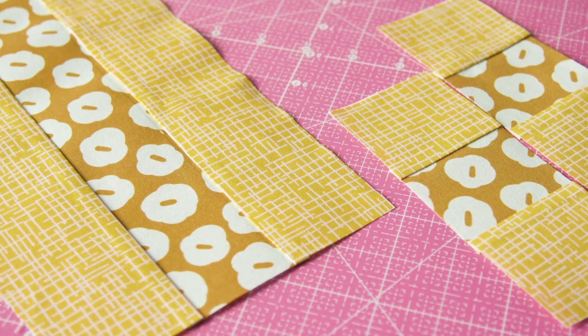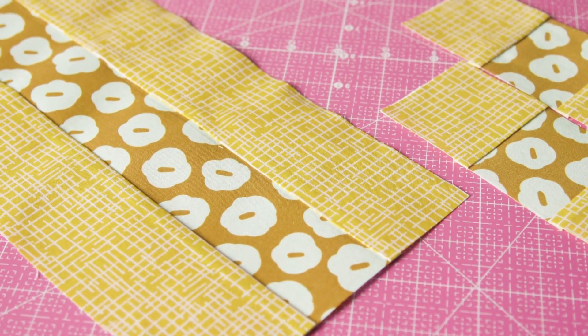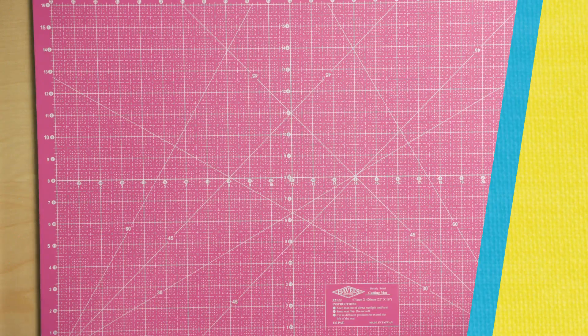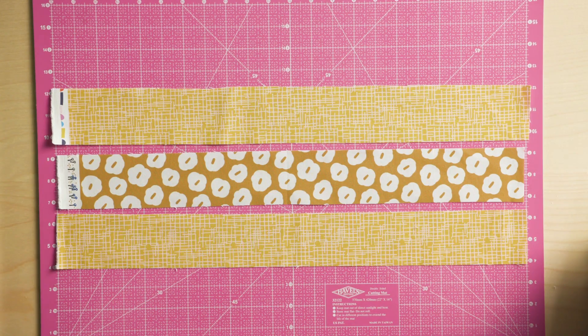A strip set is a group of strips sewn together then cut into smaller segments. To make a strip set, here we're sewing three strips. It's best to start with strips that are about 22 inches.